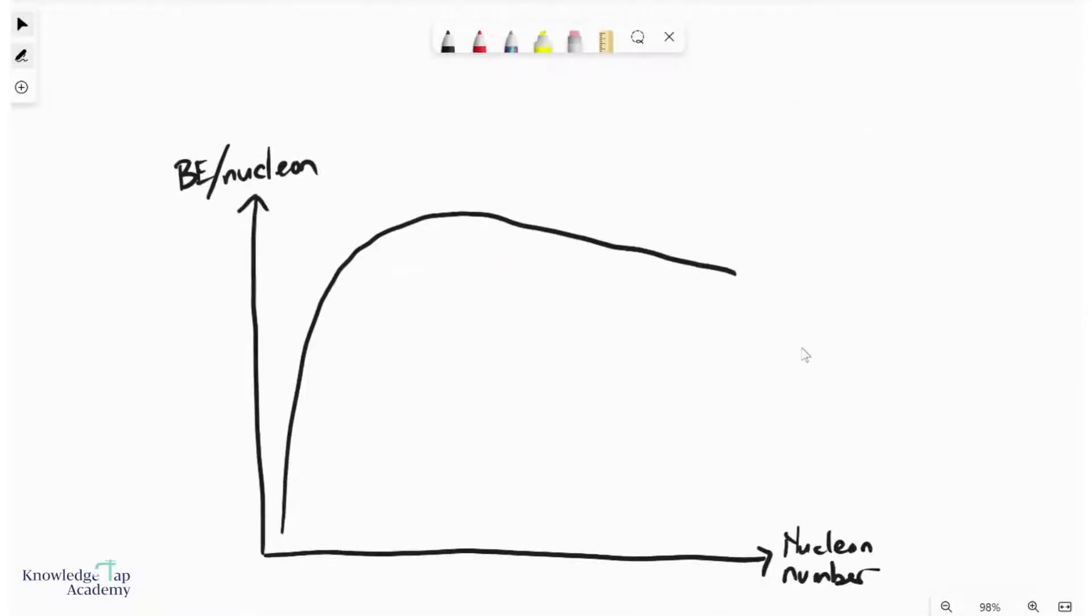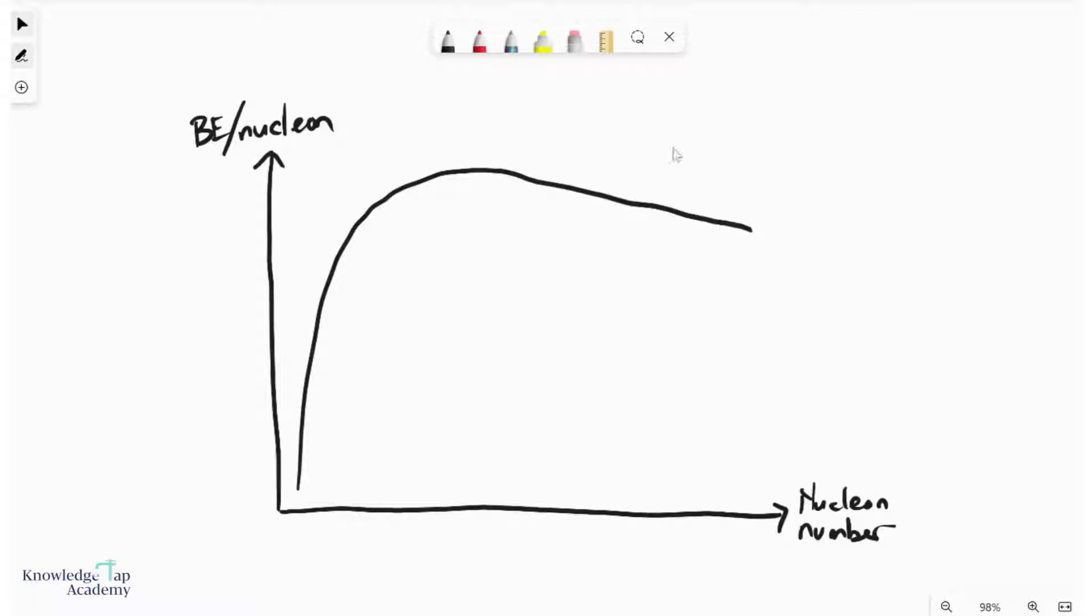Now I'm going to introduce a very interesting looking graph. This is a graph of the binding energy per nucleon and the nuclear number. We're plotting the binding energy per nucleon for every single isotope out there. The graph is quite interesting—it goes up at first and then comes down, and it actually peaks at iron-56.